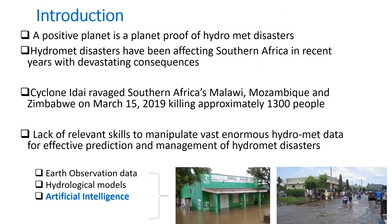Hydrometeorological disasters have been affecting Southern Africa in recent years with devastating consequences. You may remember the cyclone in Southern Africa which hit Malawi on the 15th of March 2019, killing approximately 1,300 people. A lack of relevant skills to manipulate fast and numerous hydrometeorological data for effective prediction and management of these disasters has been a major challenge.